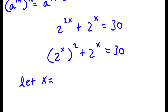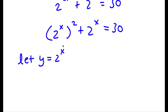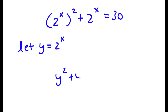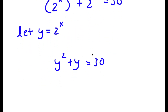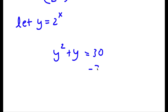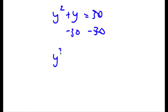Now I'm going to let the variable y equal 2 to the power of x. So now I have y squared plus y is equal to 30. If I subtract 30 on both sides, these two cancel out, and I'm left with y squared plus y minus 30 is equal to 0.